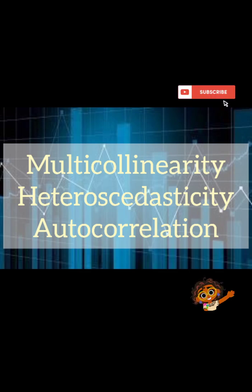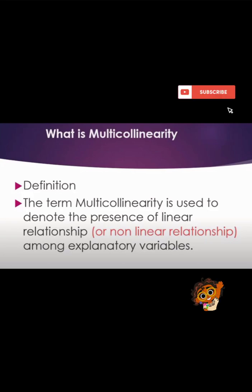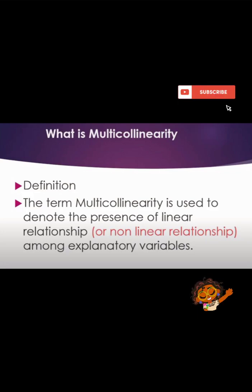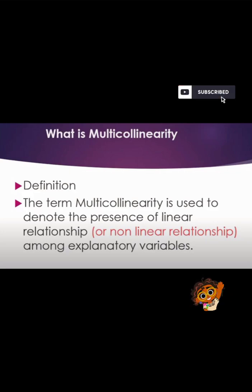The third one is autocorrelation. Now we are focusing on multicollinearity. The term multicollinearity is used to denote the presence of a linear relationship or non-linear relationship among explanatory variables. In the OLS assumption, the assumption is that there should be no relationship between the independent or explanatory variables. Where it violates, the problem of multicollinearity comes.